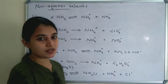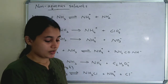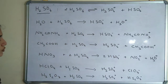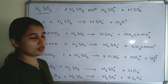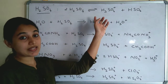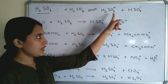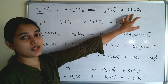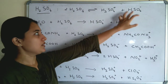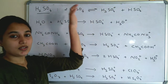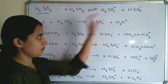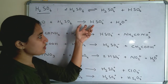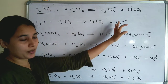Moving to the next non-aqueous solvent: sulfuric acid. In sulfuric acid, the auto-ionization is: H2SO4 → H3SO4⁺ + HSO4⁻. In the case of H2O + H2SO4 → HSO4⁻ + H3O⁺.